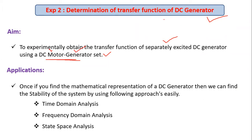For the transfer function of a separately excited DC generator, we give electrical energy to the field winding for excitation — that is the input. The output is the induced EMF generated in the armature. So the final transfer function will be EG(s) / EF(s), where EG(s) is the generated EMF in the armature and EF (or VF) is the voltage applied to the field winding.